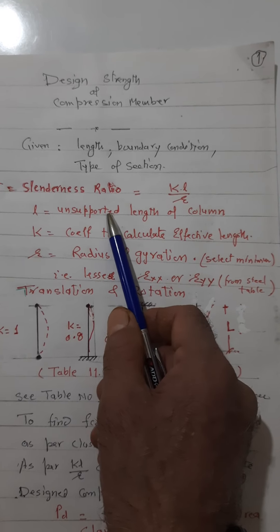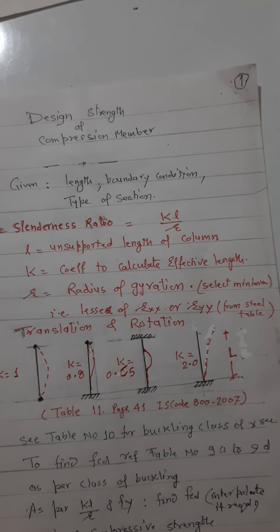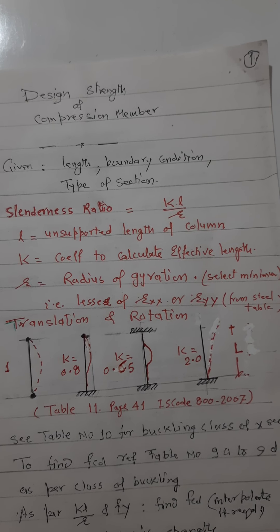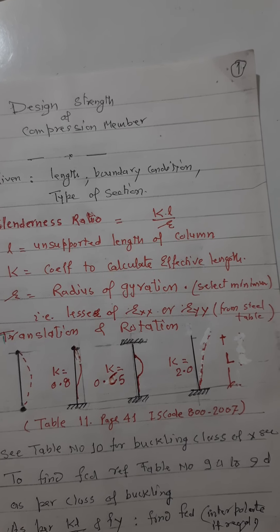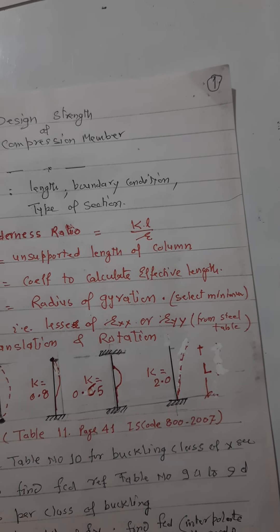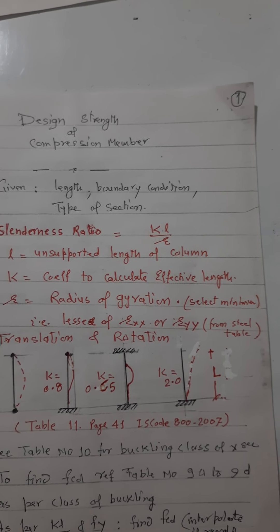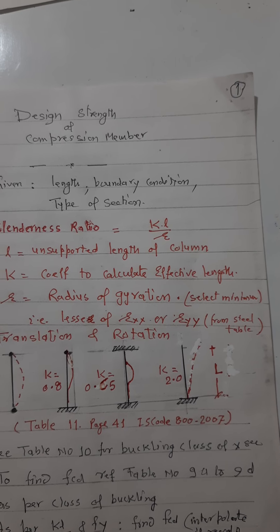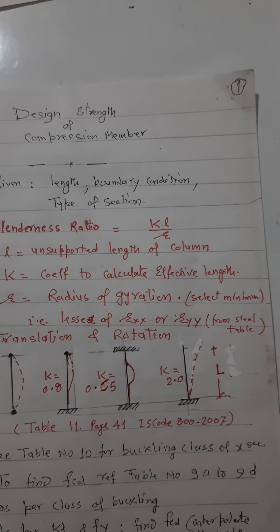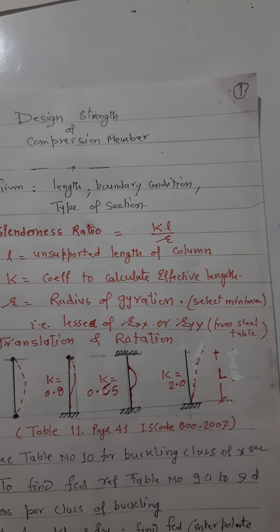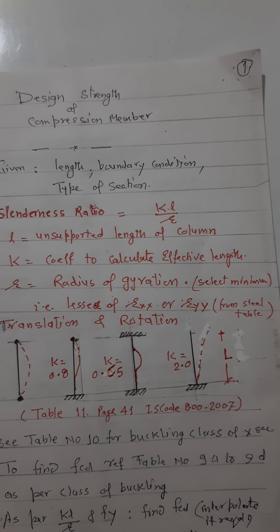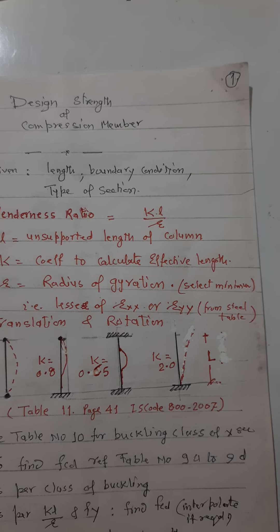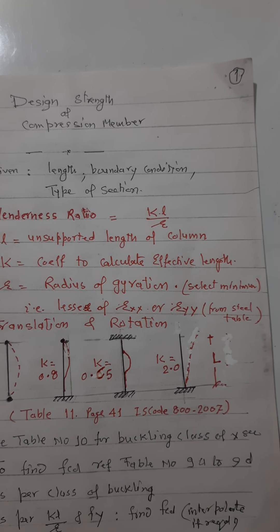Lambda (λ) is the slenderness ratio, which equals kL divided by r, where kL is the effective length and r is the minimum radius of gyration. As per the IS code, under any circumstances, the effective length divided by the minimum radius of gyration should not exceed 180. If kL/r_minimum exceeds 180, the section must be changed.